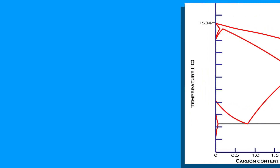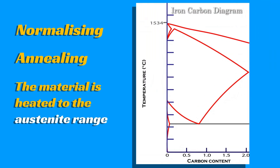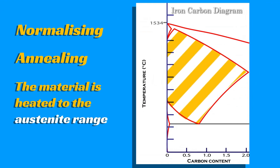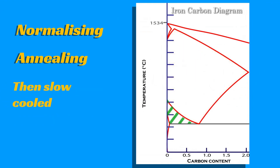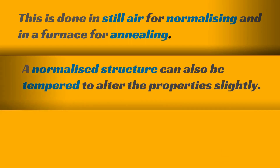In both normalizing and annealing, the material is heated to the austenite range and then slow cools. This is done in still air for normalizing and in a furnace for annealing. A normalized structure can also be tempered to alter the properties slightly.